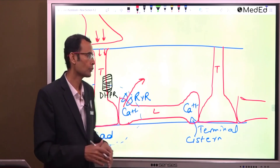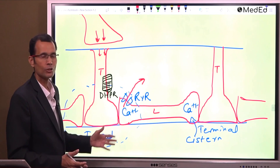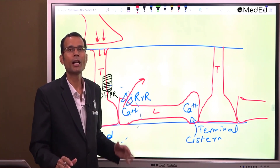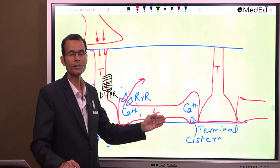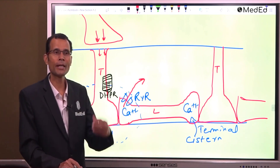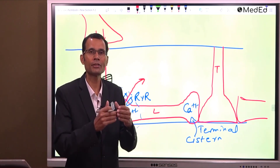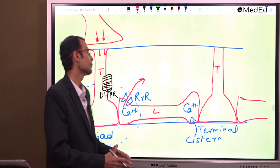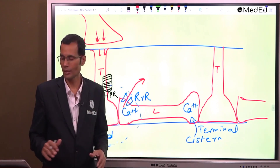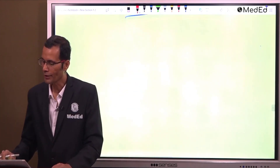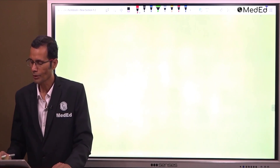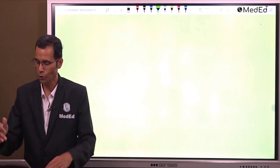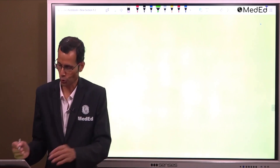So, up to the release of calcium the events were electrical, and after the release of calcium the mechanical process of thin and thick filament interaction started. Therefore, calcium is the coupling agent. For a short note, draw this diagram and draw this flow chart.